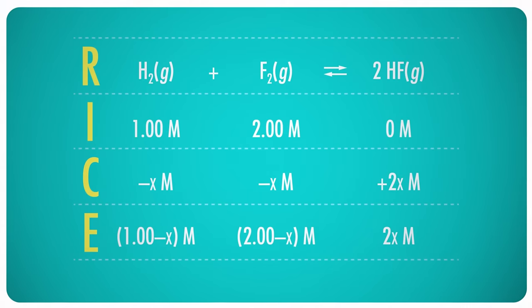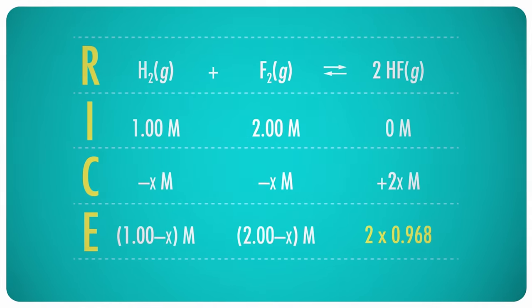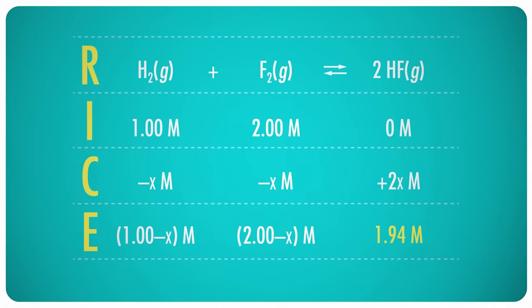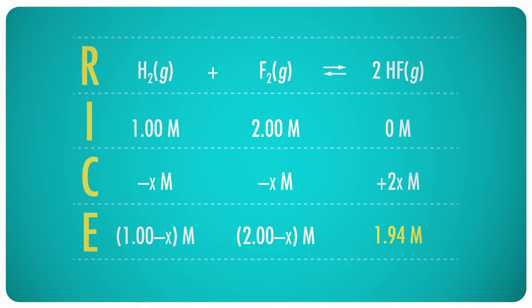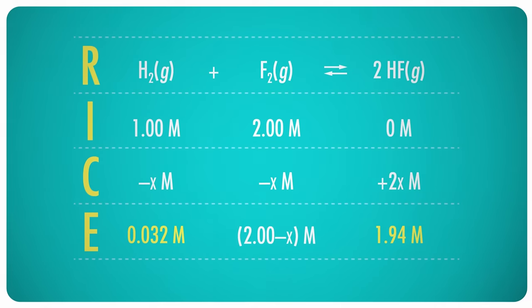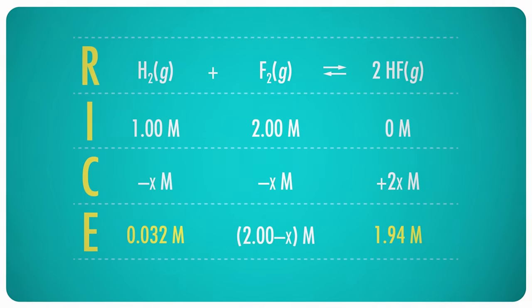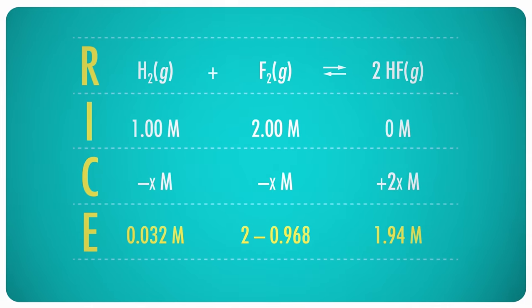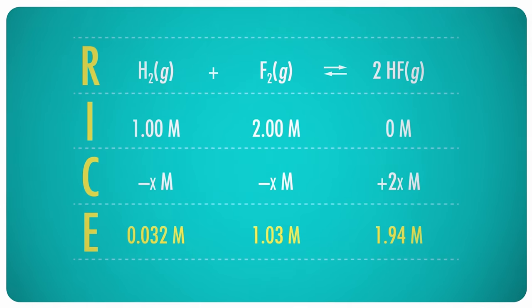Using that, then, we can calculate the actual equilibrium amounts for each substance. At equilibrium, under these specific conditions, the concentration of HF is 2x, or 2 times 0.968, which equals 1.94 molar. The concentration of hydrogen will be 1 minus 0.968, or 0.032 molar, and the concentration of fluorine will be 2 minus 0.968, or 1.03 molar.